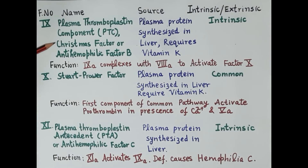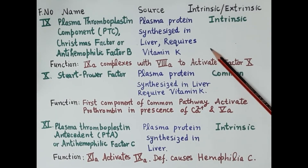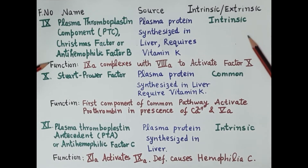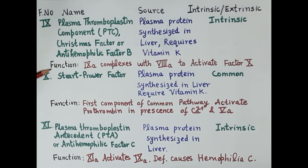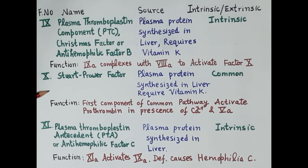Clotting factor 9 is termed plasma thromboplastin component (PTC), also called the Christmas factor or anti-haemophilic factor B. It is a plasma protein synthesized in the liver, and its synthesis requires the presence of vitamin K. It is essential for the intrinsic pathway. Clotting factor 9a complexes with 8a to activate clotting factor 10 in the intrinsic pathway.